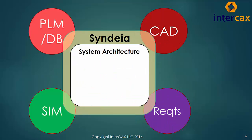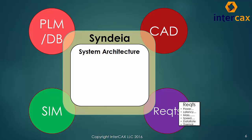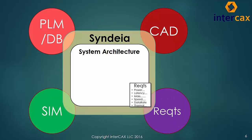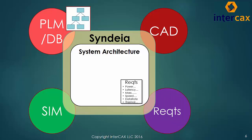Let's imagine an engineering process. It begins by moving a list of requirements from a requirements management tool into the SysML model, adding subsystem structure from one vendor's PLM repository and component data from another vendor's database.